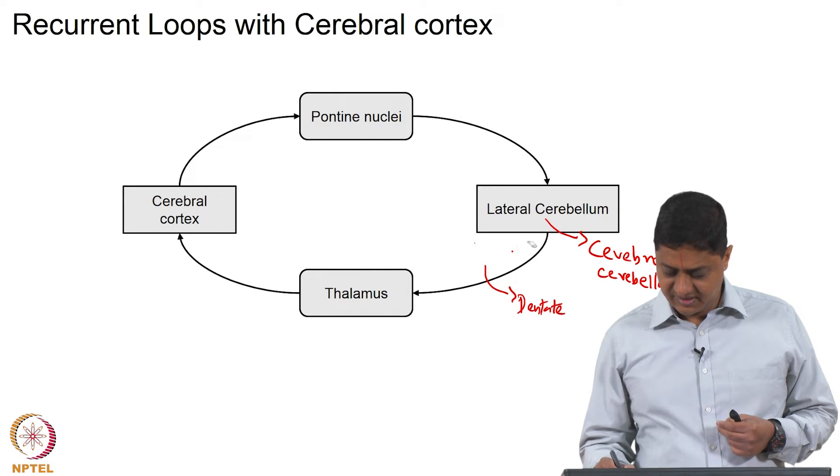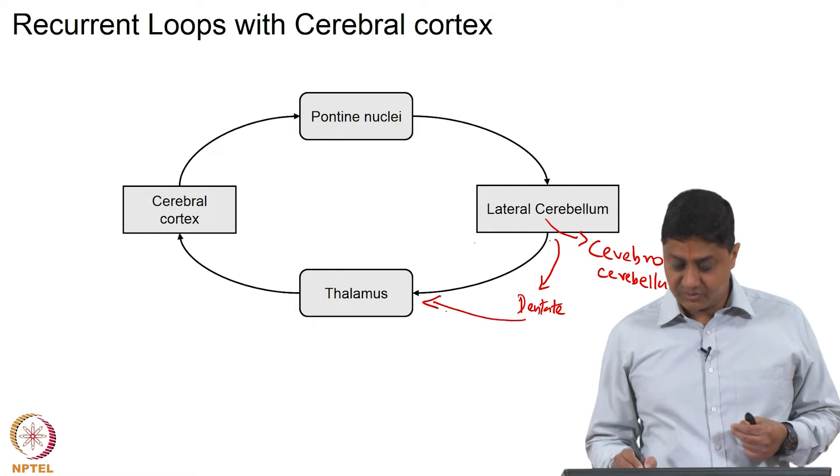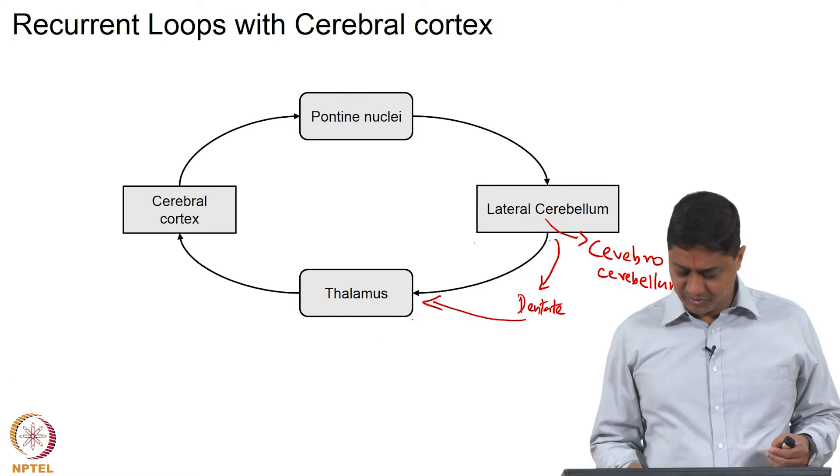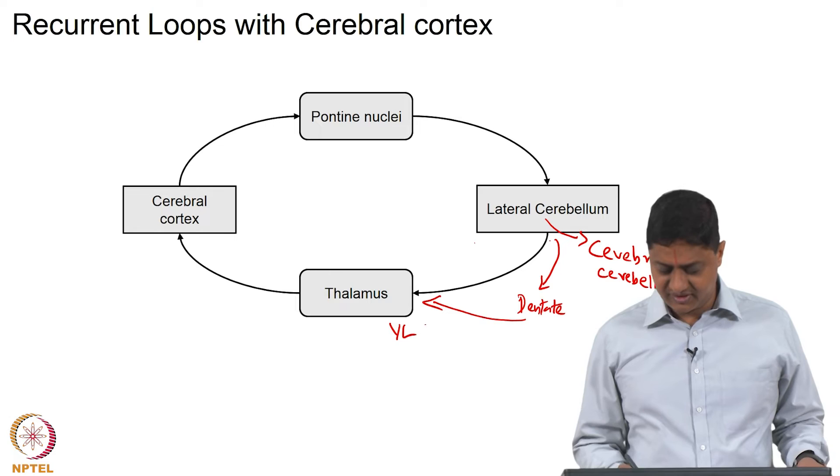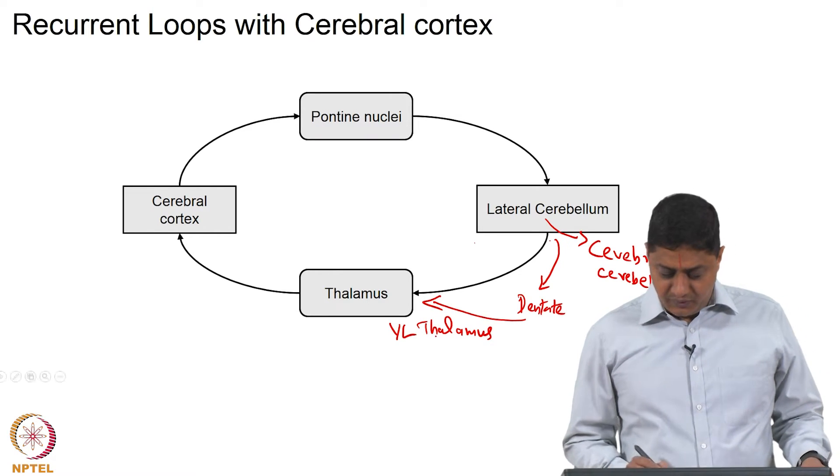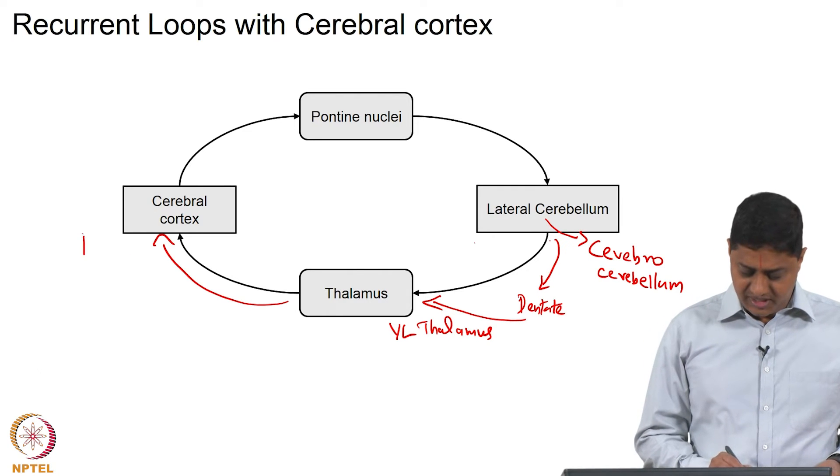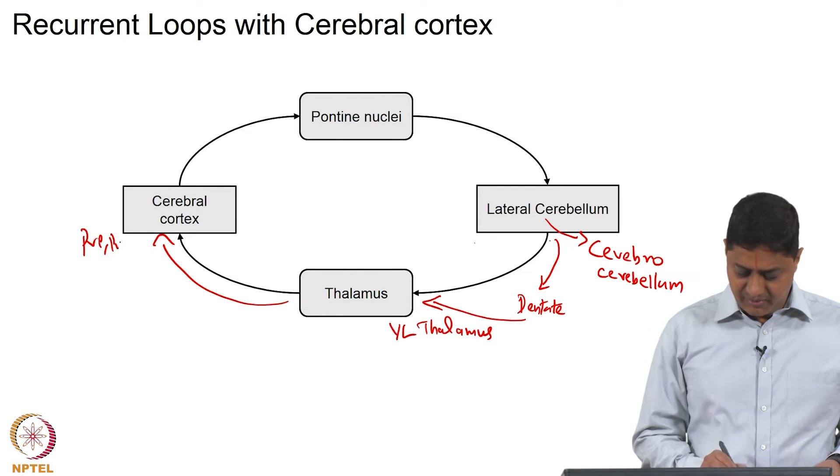From the lateral cerebellum projection is to the dentate nucleus, and from the dentate nucleus to the thalamus, more specifically to the ventrolateral nucleus of the thalamus. The thalamus then relays information back to the pre and primary motor areas, effectively completing a loop.